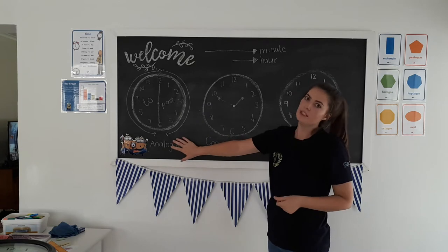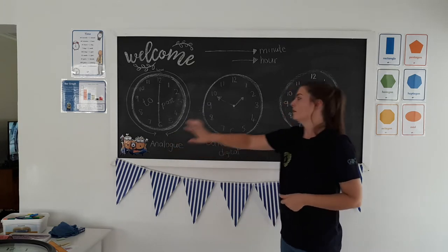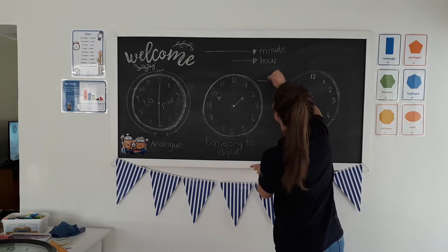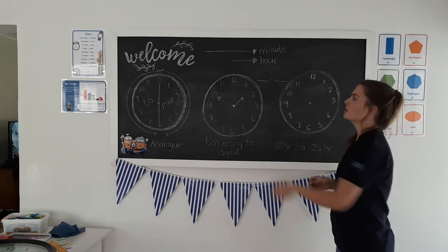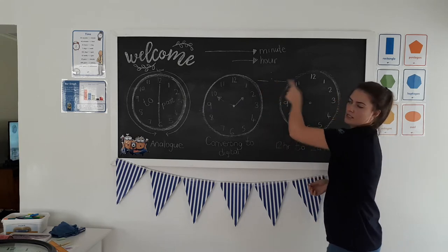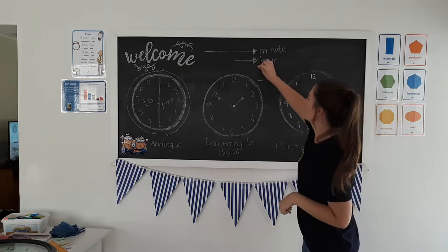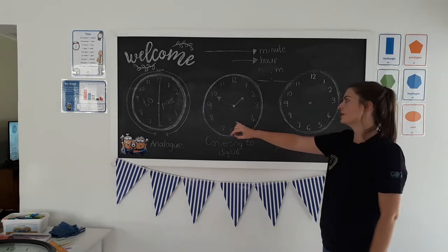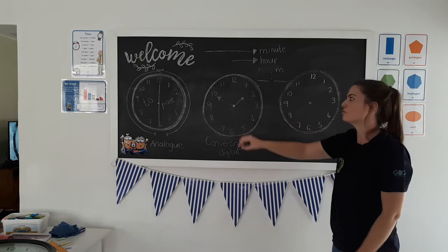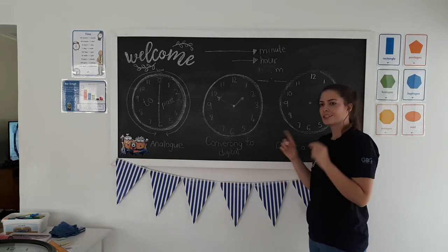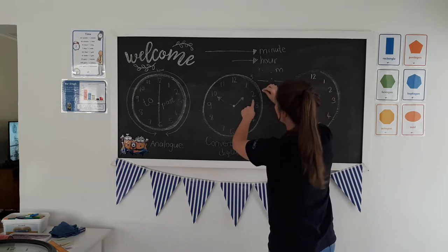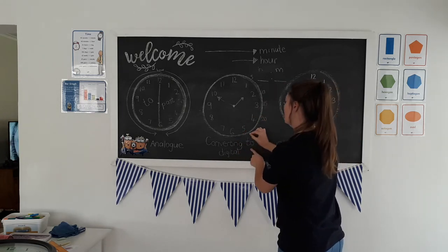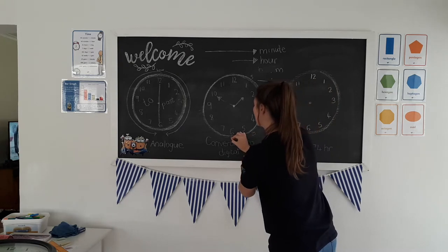That is how, very briefly, to tell analog time. Let's have a look at converting between analog and digital. On a digital clock, you have something that looks like that. You have a number, colon, another number. This is the hour side and the minute side.